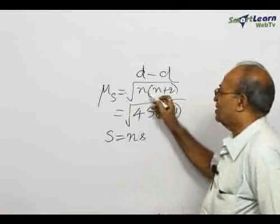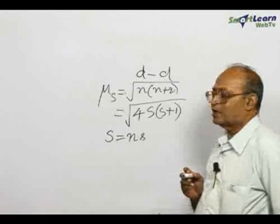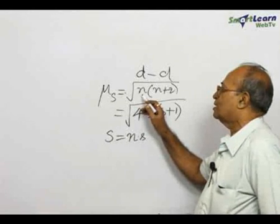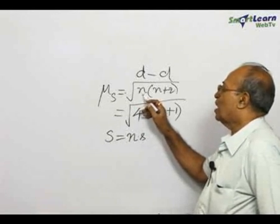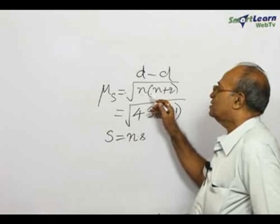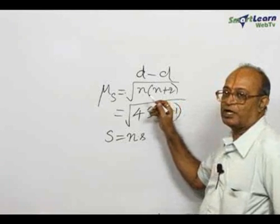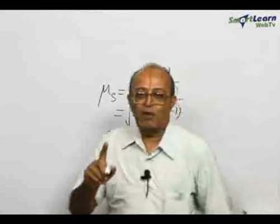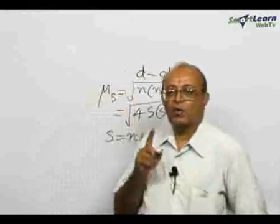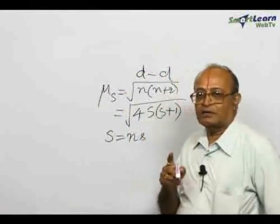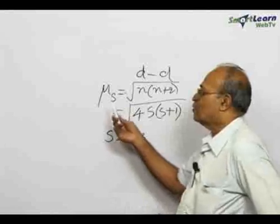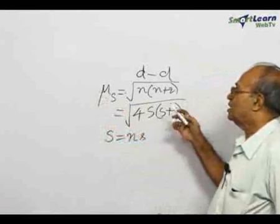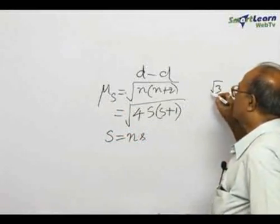Let us consider the first expression, √(n(n+2)). If there is one unpaired electron, n equals 1. So 1 × (1+2) equals 1 × 3, giving √3. Similarly, if a compound contains one unpaired electron, the spin-only magnetic moment will correspond to √3.